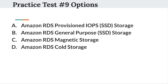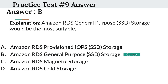Please select your answer in the next 5 seconds. So the right answer is option B. Amazon RDS General Purpose SSD storage would be the most suitable. Let's move to the next question.